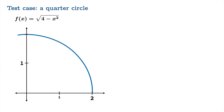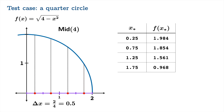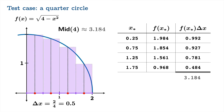Finally, let's create a midpoint Riemann sum with four divisions. We chop the interval into four equal pieces, so the width of each sub-interval is 0.5. We use the midpoint to sample the function. With our smaller table we take the products, add up all these contributions, and we get about 3.184. Compared to pi, this is about 1.3% too large.